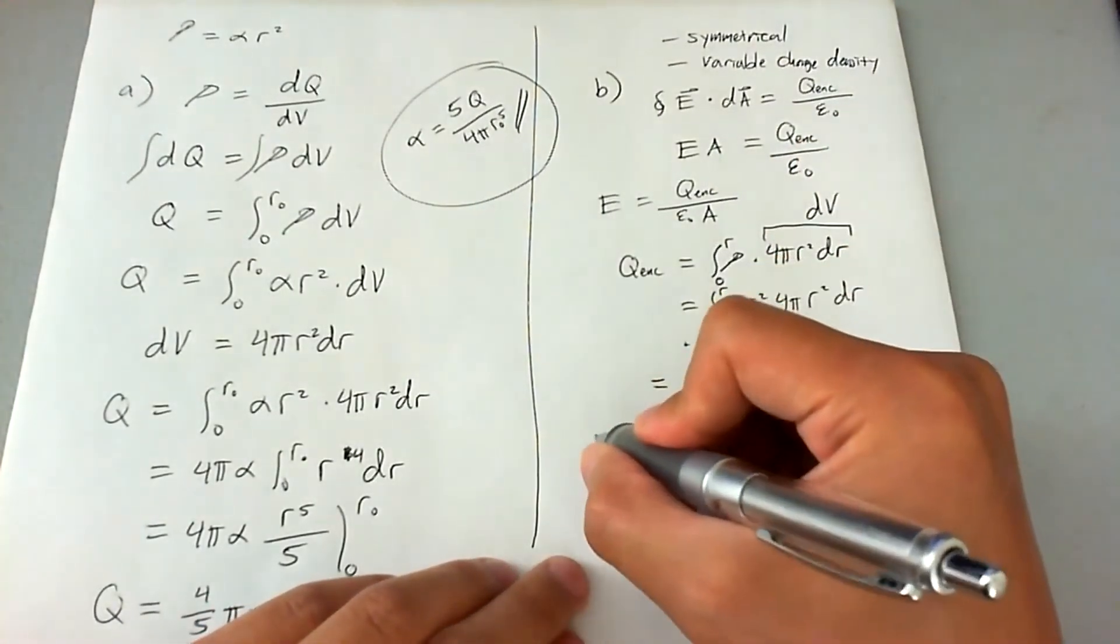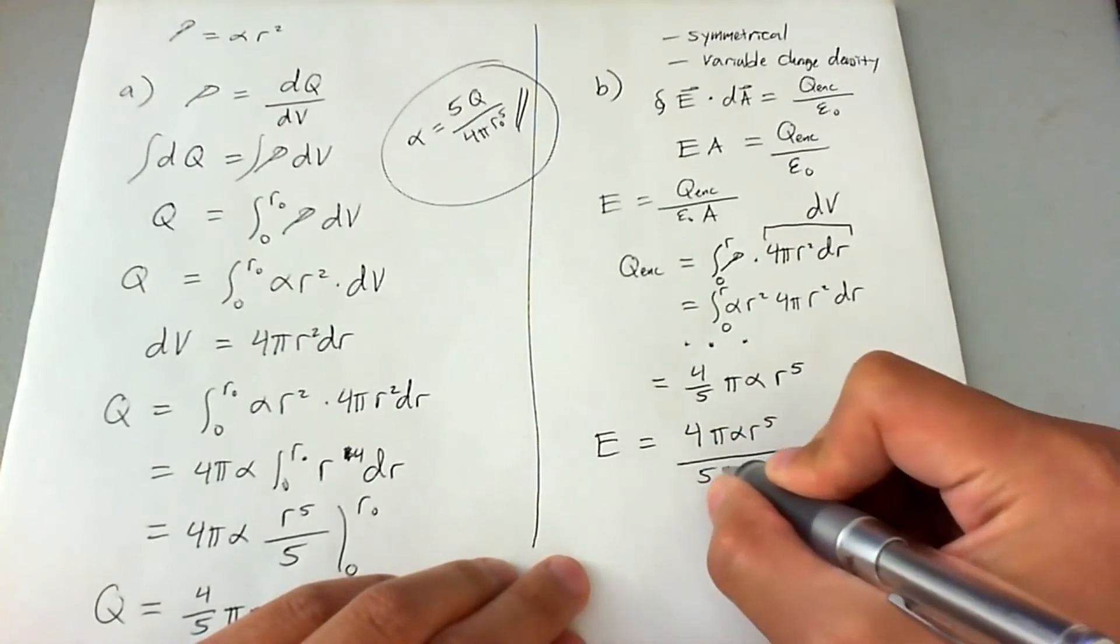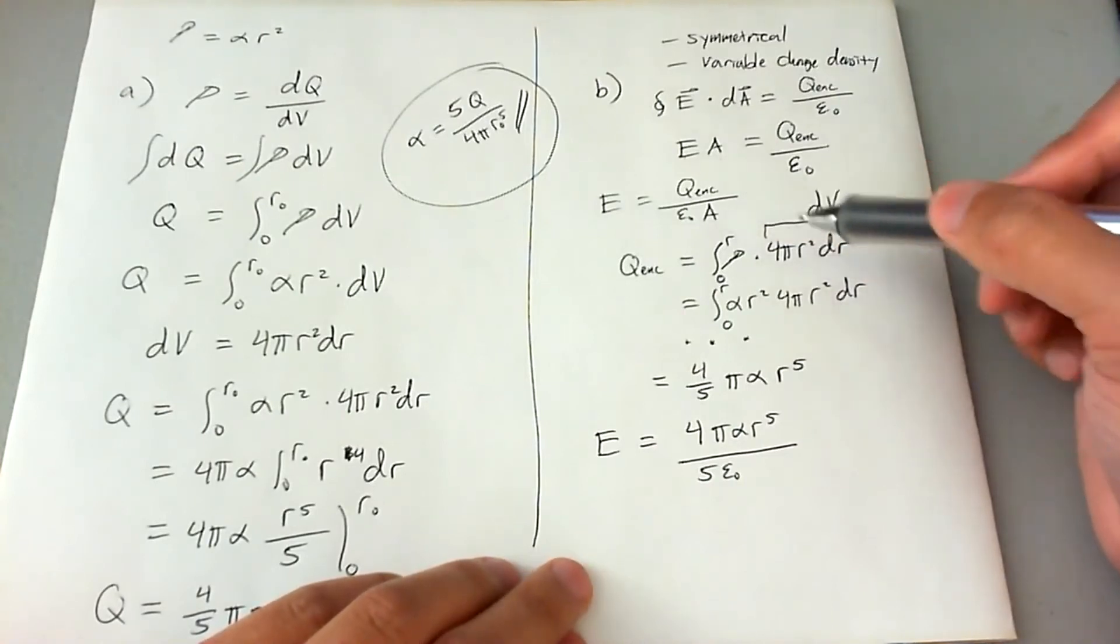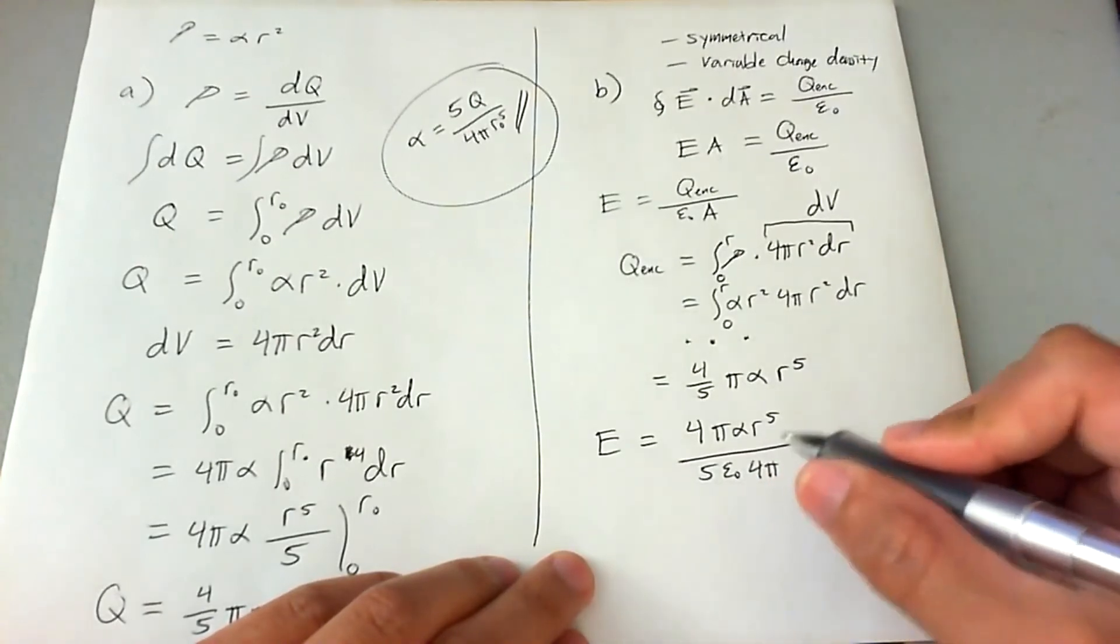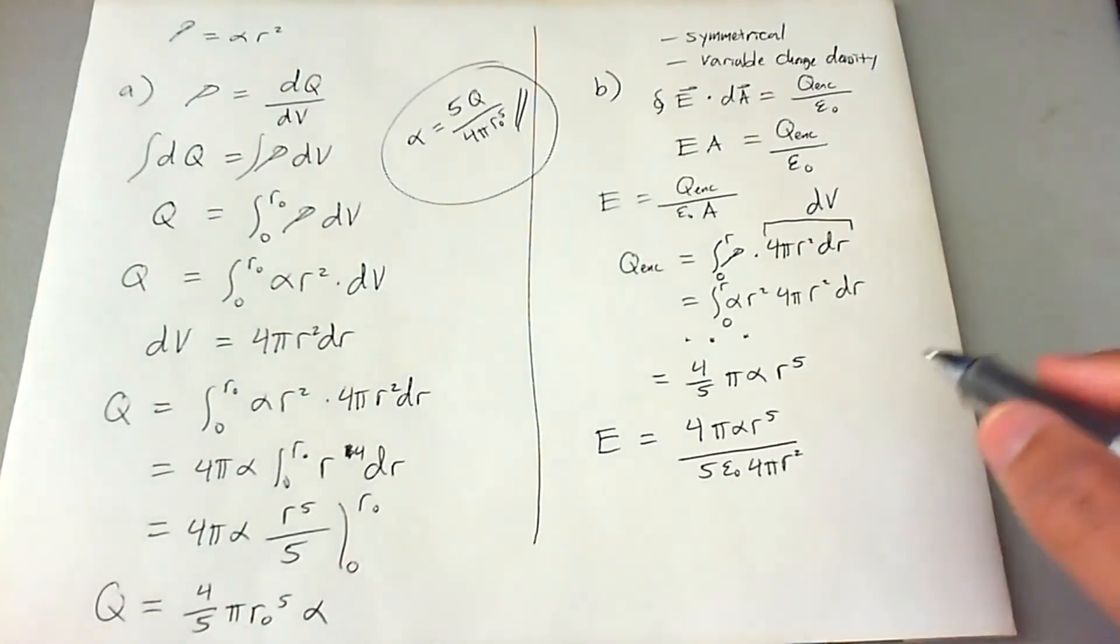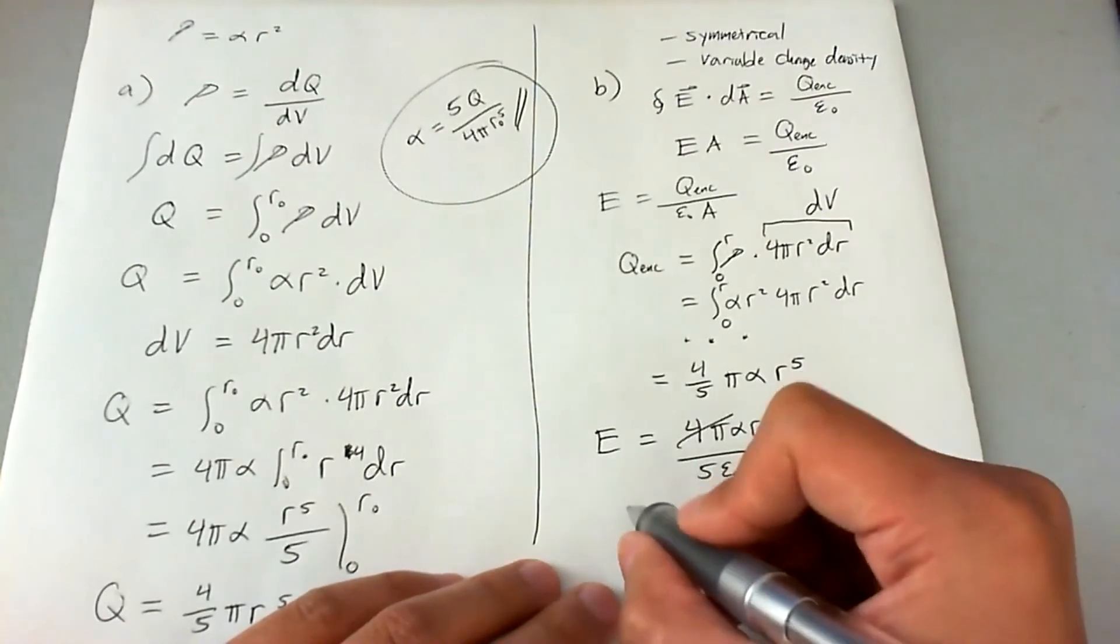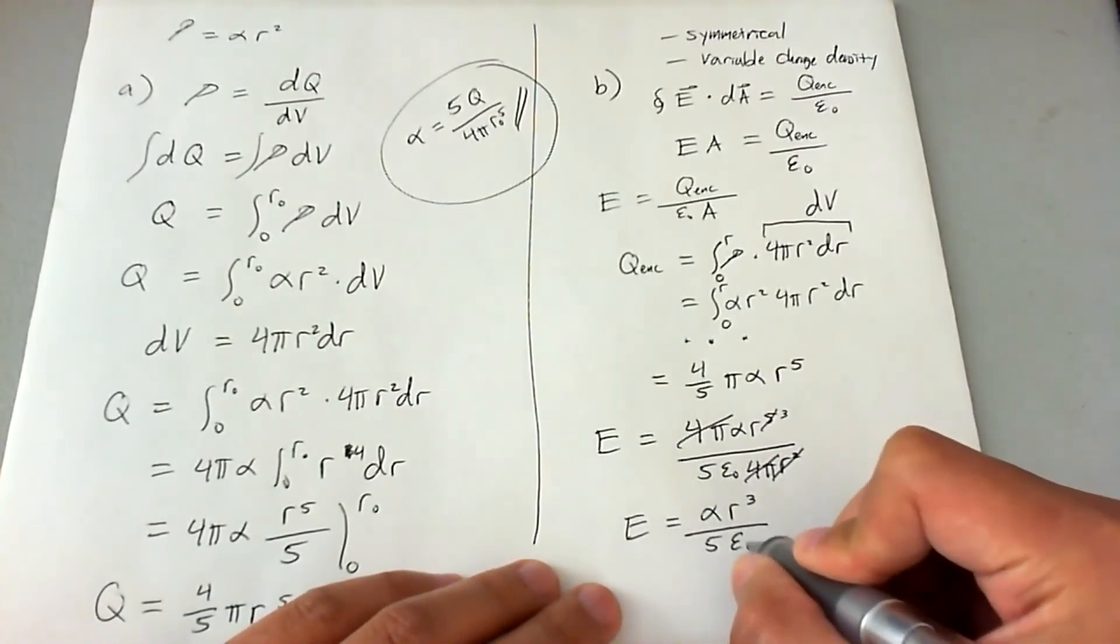Let's go ahead and plug that in here. So E ends up being 4 pi alpha r to the fifth divided by 5 epsilon naught A. Now let's go ahead and get A of this Gaussian curve to be something that's a bit more familiar to us. A of an arbitrary Gaussian curve is just going to be 4 pi, especially if it's a sphere, it's going to be 4 pi r squared. So that's the area of a Gaussian curve, a spherical Gaussian curve of radius r. We're going to go ahead and eliminate a few items here. R squared turns this fifth power into the third power. And we end up getting E is equal to alpha r to the third over 5 epsilon naught.